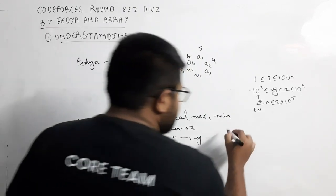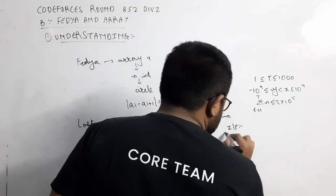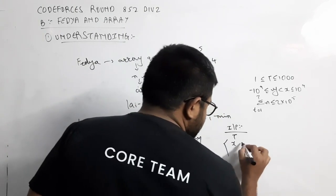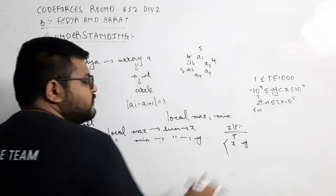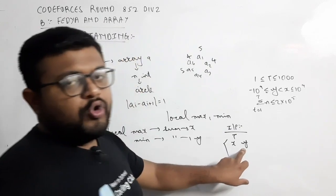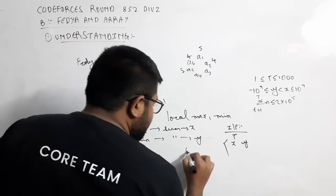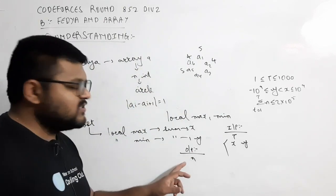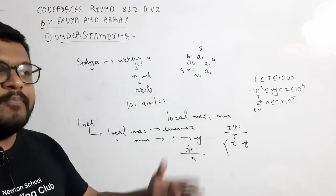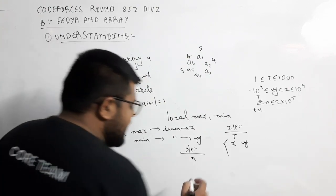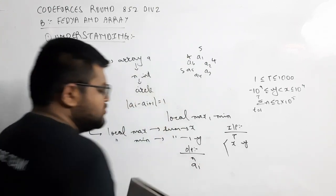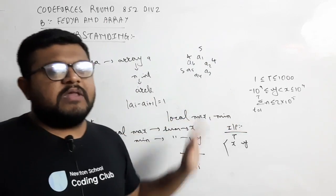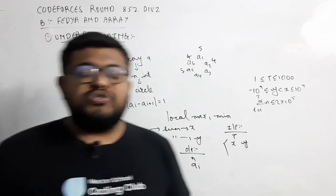Input: the first line contains the number of test cases. Each test case has one line with two integers x and y, where x is the sum of local maximum elements and y is the sum of local minimum elements. Output: in the first line print n — the minimum length of the array — and in the next line print n integers of the array such that they satisfy all the given properties.